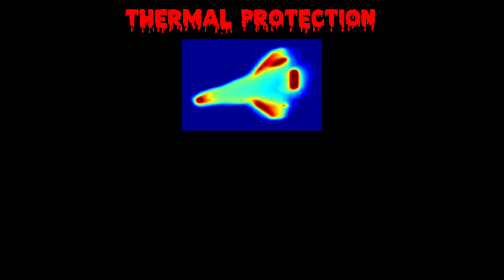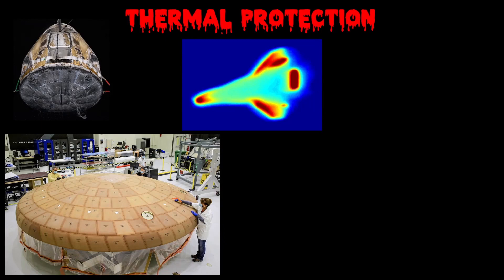The first challenge with any vehicle that has to re-enter is thermal protection, a way to deal with the heat of re-entry. There are two traditional approaches to deal with this. The first is the ablative heat shield used on capsules like Dragon and Orion. It has a material that slowly chars and vaporizes to deal with the heat.